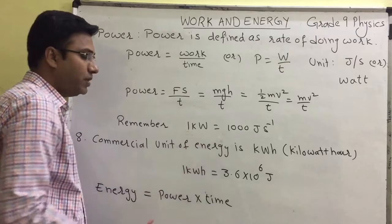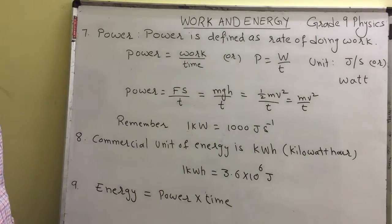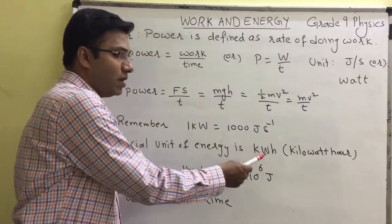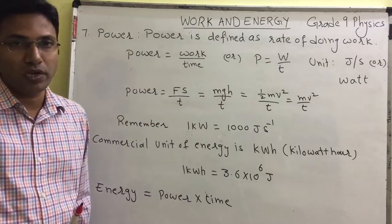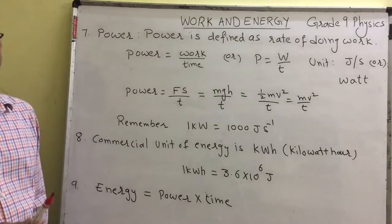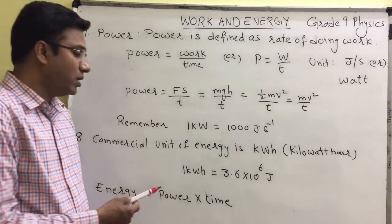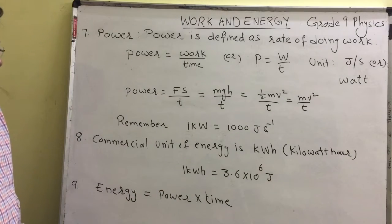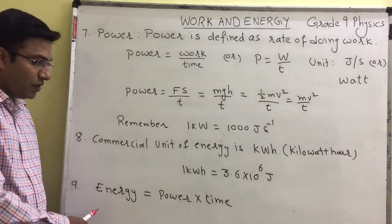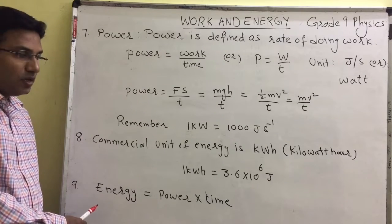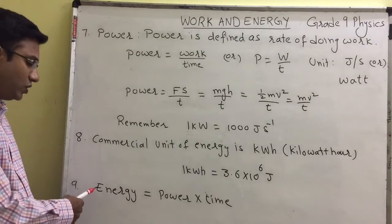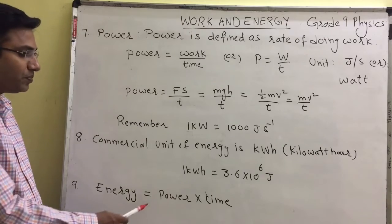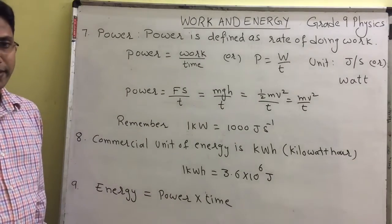When we are using power in large quantities, we use the unit kilowatt in place of watt. Kilo means thousand, so 1 kW is 1000 joules per second. Next, the commercial unit of energy — the electrical energy consumed in homes, schools, and offices is measured in kilowatt-hour. One kilowatt-hour is equal to 3.6 × 10⁶ joules. For calculating energy for electricity consumption, we use the formula: energy is equal to power into time. Time must always be converted into seconds.